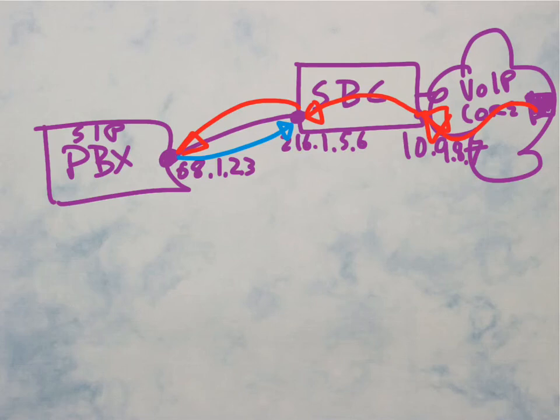then I know that that means that I am supposed to send that call through to the VoIP core server, the call server, and I'm going to send that call from 10.9.8.7.